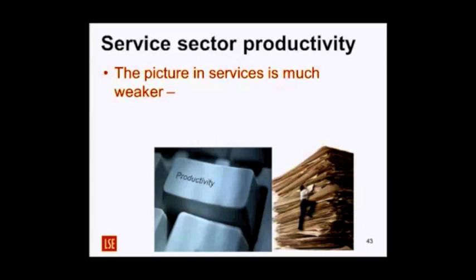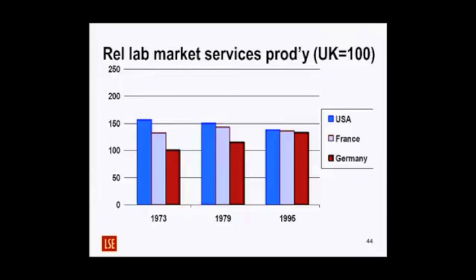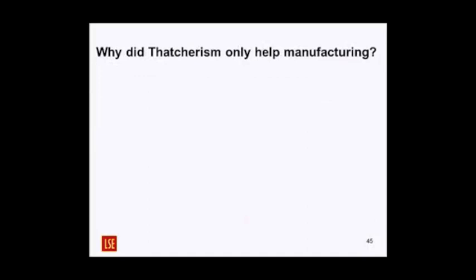The picture of services is quite different — services do not look good. In 1973, 1979, and 1995, everyone is doing better than Britain. In 1995 Britain's position in aggregate marketed services is actually worse than it was in 1973. So why did Thatcher's policies only help manufacturing? We'll look at: trading sectors, unions, privatisation, investment and FDI, and education.